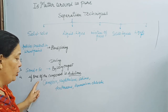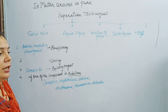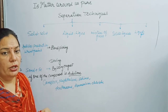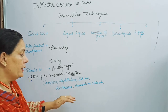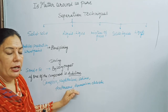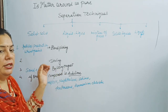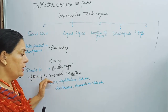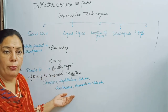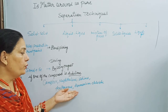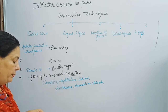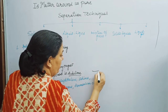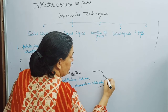So to identify which technique to use: if iron is present as a component in any mixture, we use a magnet. If any component in a mixture has the property of sublimation, then we use the separation technique called sublimation.